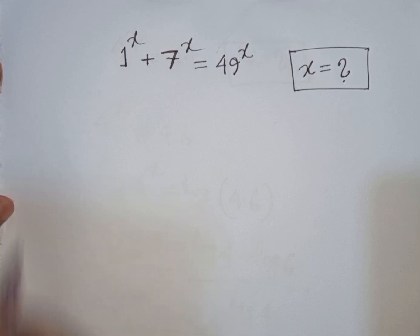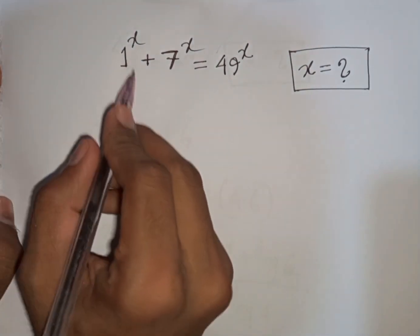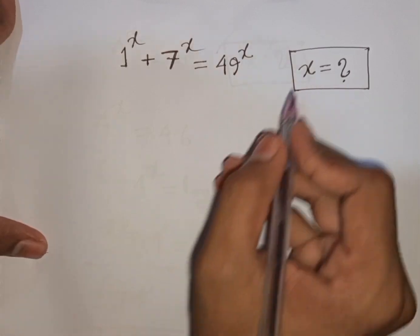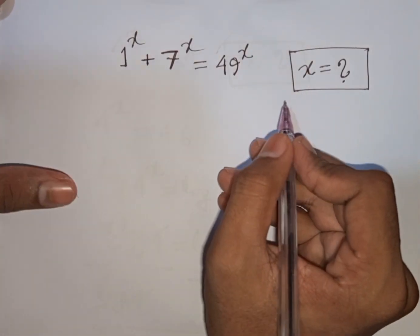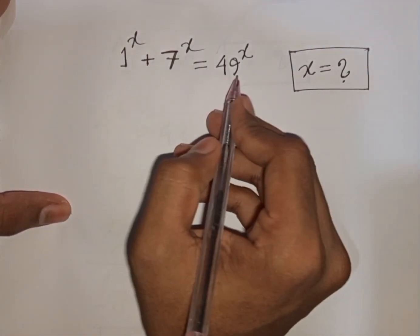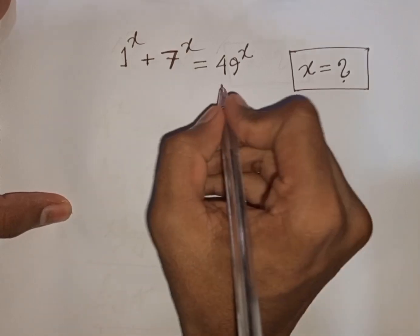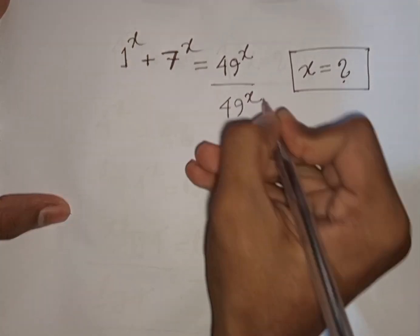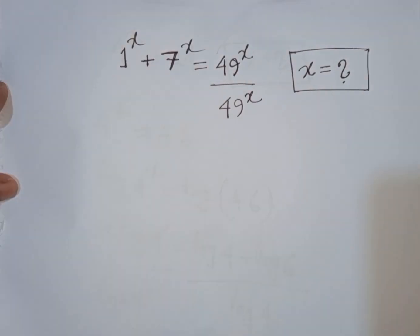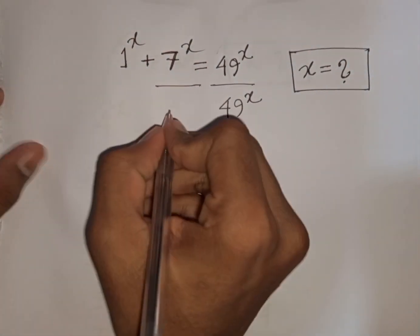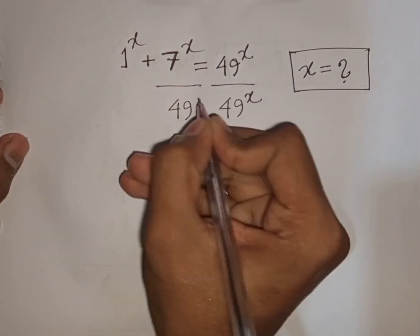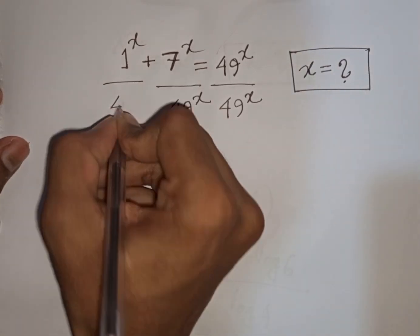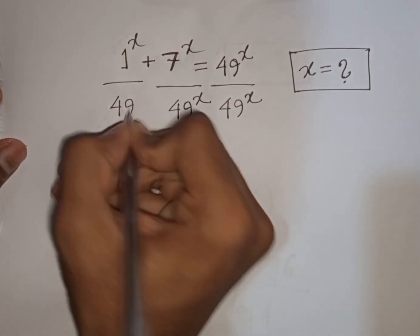How to solve 1^x + 7^x = 49^x. Find the value of x. First, we divide both sides by 49^x.